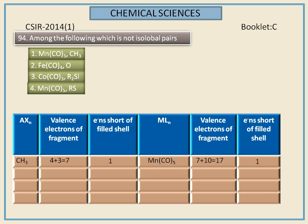Next, we calculate for oxygen and tetracarbonyl ion. For oxygen, it has 6 valence electrons. For tetracarbonyl ion, it has 16 valence electrons. Here also, it requires only 2 electrons to get the stable configuration.